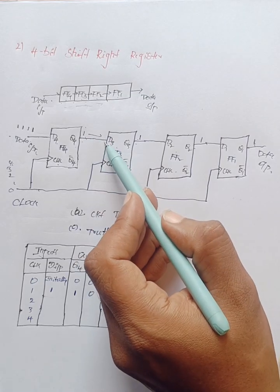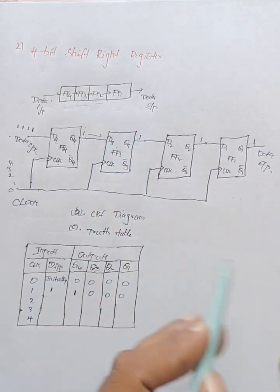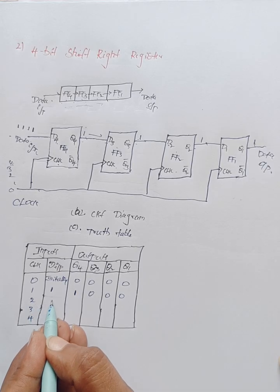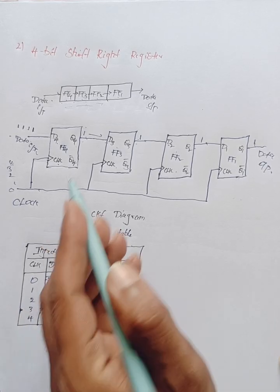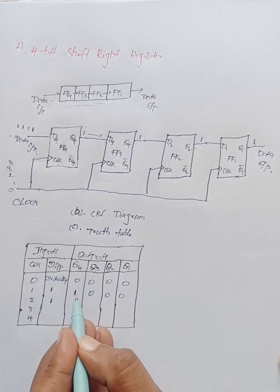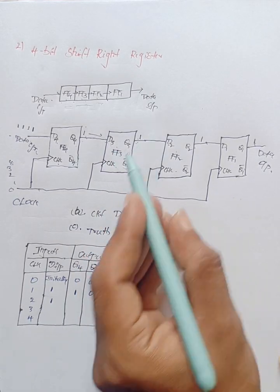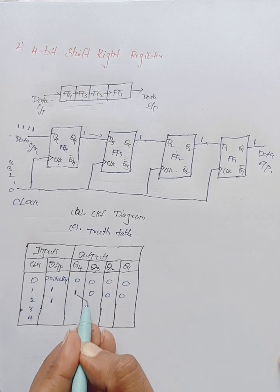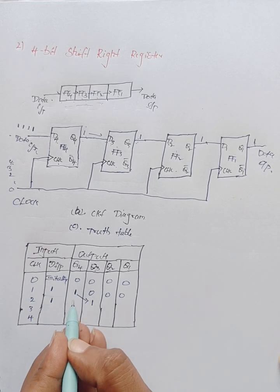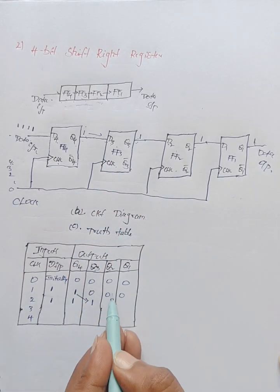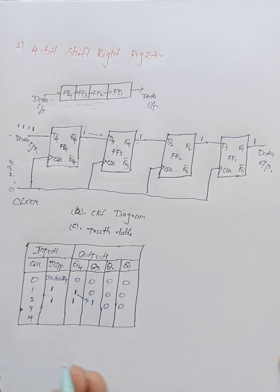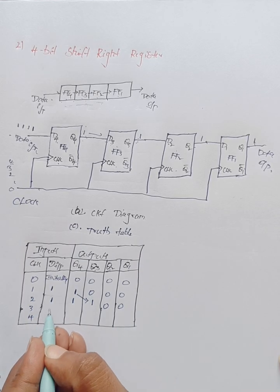Whenever the second clock pulse is applied, input data one is again applied. Q4 output remains one. The Q4 output feeds into D3 input, so Q3 output value becomes one. Fresh data enters D4, so Q4 remains one. Q3 and Q4 hold their values while Q2 and Q1 remain zero.